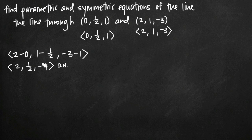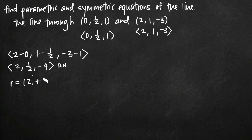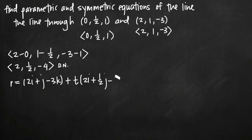Now, to find parametric equations of the line, we first write the vector equation of the line, which we define as r. We pick one of the points the line passes through — in this case (2, 1, -3) — so r equals 2i + j - 3k. Then we add t, a parameter value, times our direction numbers in vector form: 2i + 1/2 j - 4k. This gives us the vector equation of our line.